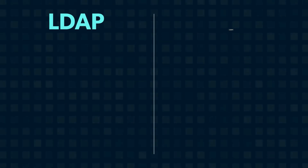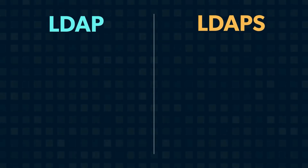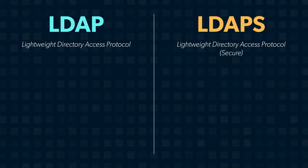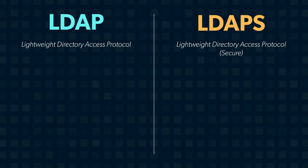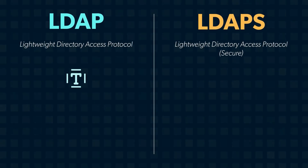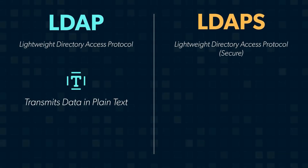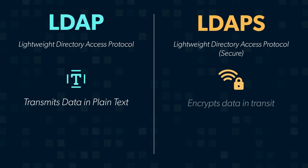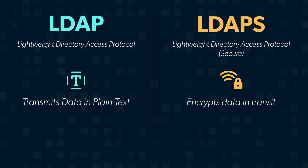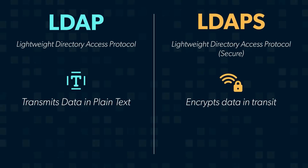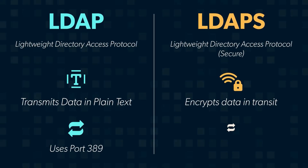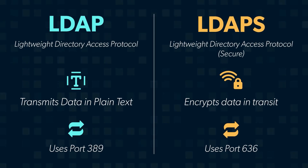To summarize, LDAP and LDAPs are both forms of the Lightweight Directory Access Protocol, which is used to manage directories and authenticate and authorize users to resources. LDAP transmits data in plain text, while LDAPs encrypts data in transit, which makes it a more secure form of the LDAP protocol. LDAP uses port 389, while LDAPs uses port 636.